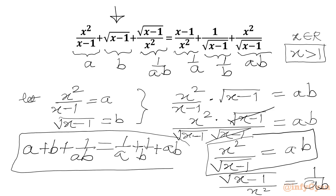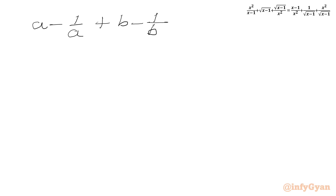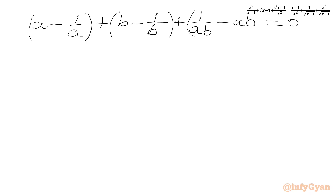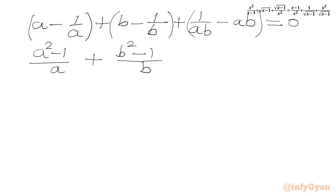Now we have to solve this equation. Let us take all the terms to LHS: (a − 1/a) + (b − 1/b) + (1/(ab) − ab) = 0. Now we will simplify these three brackets: (a² − 1)/a + (b² − 1)/b + (1 − a²b²)/(ab).